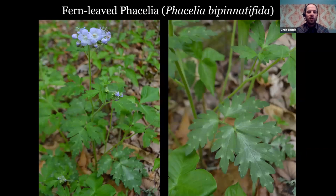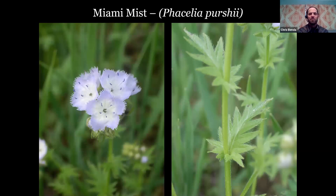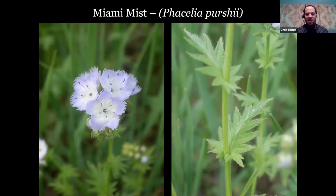Fernleaf Phacelia looks like a waterleaf — it has water spots on it. It is related to waterleaf but is in the genus Phacelia; waterleaf is Hydrophyllum. This is Phacelia bipinnatifida because it has bipinnatifid leaves. There are three other Phacelias in Illinois, but that one's more common. Here's another — Phacelia purshii, called Miami Mist. It has beautiful little fringed petals. Not to be confused with fringed Phacelia from the Smoky Mountains, which we don't have in Illinois. Miami Mist is an annual and where it grows, there's often a lot of it — along Snake Road at LaRue Pine Hills, for example.